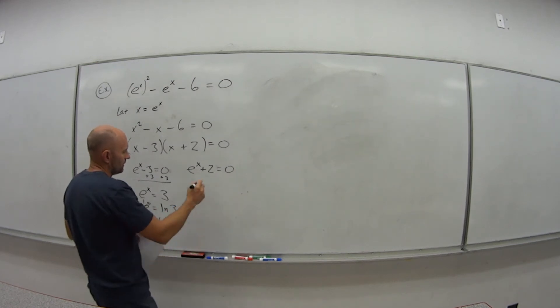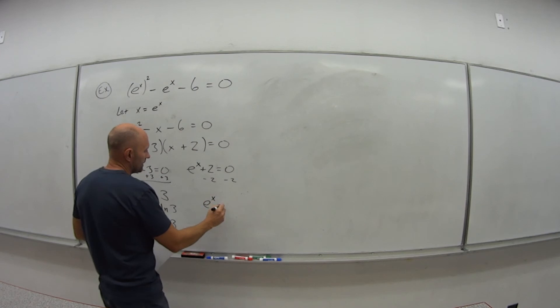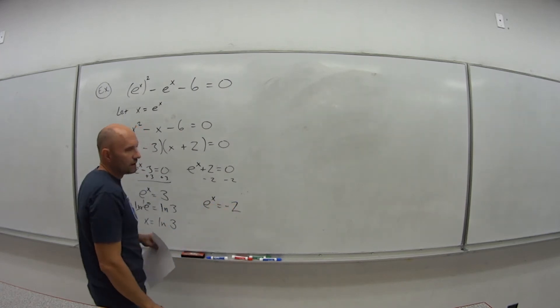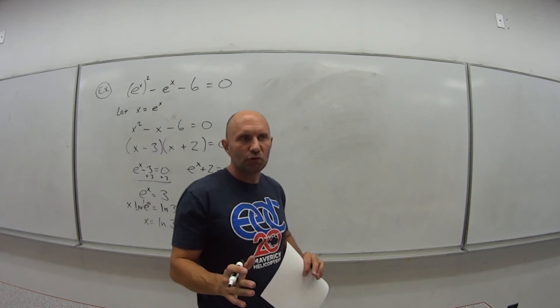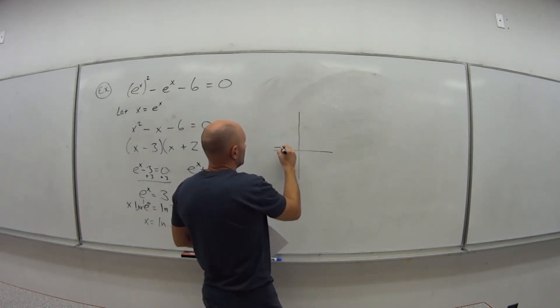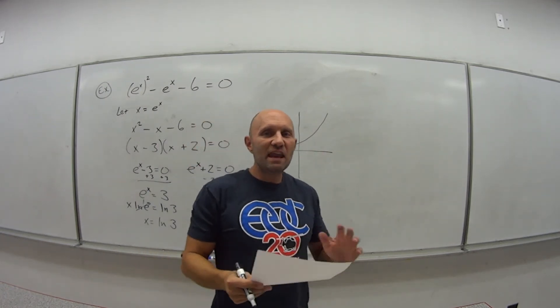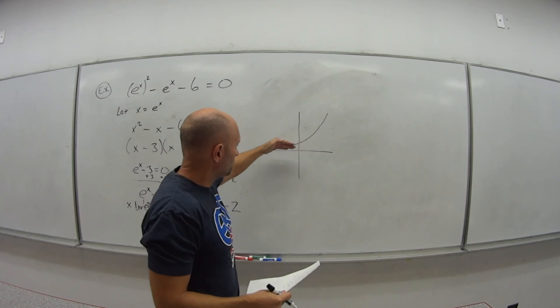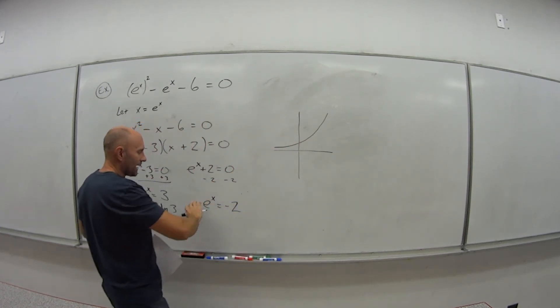How about this one? Well if I subtract 2, I get e to the x equals negative 2. So now, let's think about what does our exponential graph look like? It looks like this, right? Our exponential graph never has a negative value. It never goes below the x axis. So I cannot pick any value for x that's going to give me a negative number.